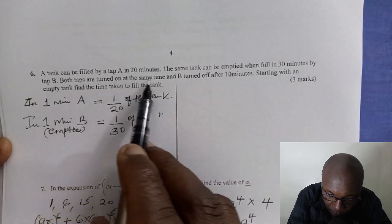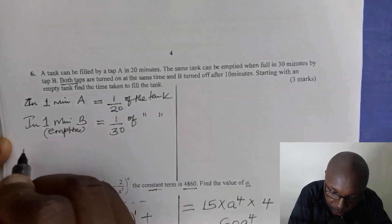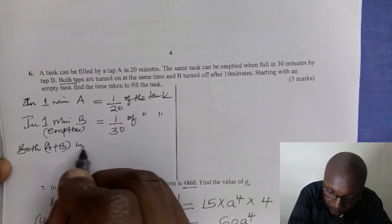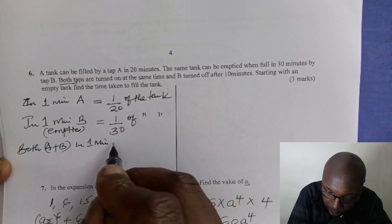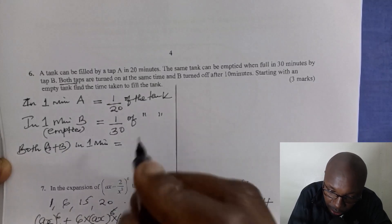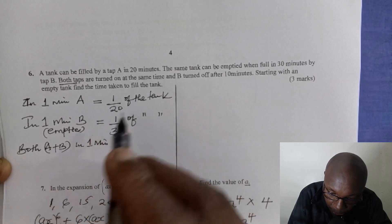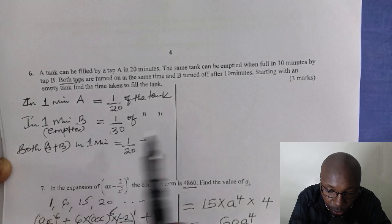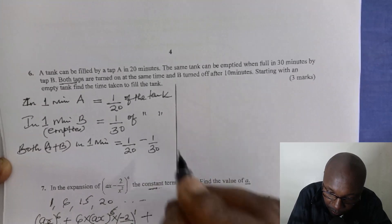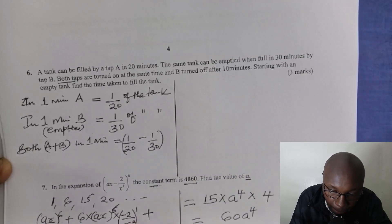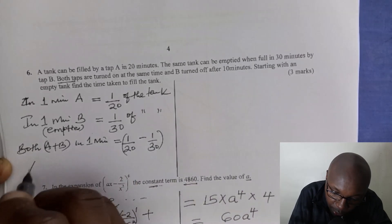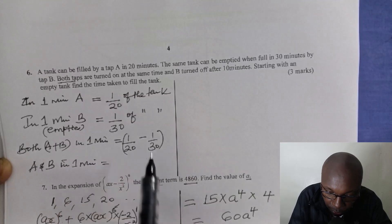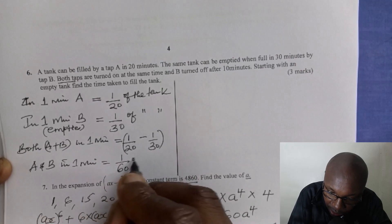Now, both taps are turned on at the same time. When both A and B are running, we need to find what fraction of the tank they fill together in one minute. We take the fraction filled by A, which is 1 divided by 20, and since B is emptying the tank we subtract. Therefore, A and B together in one minute will fill 1 over 20 minus 1 over 30, which gives 1 over 60 of the tank.